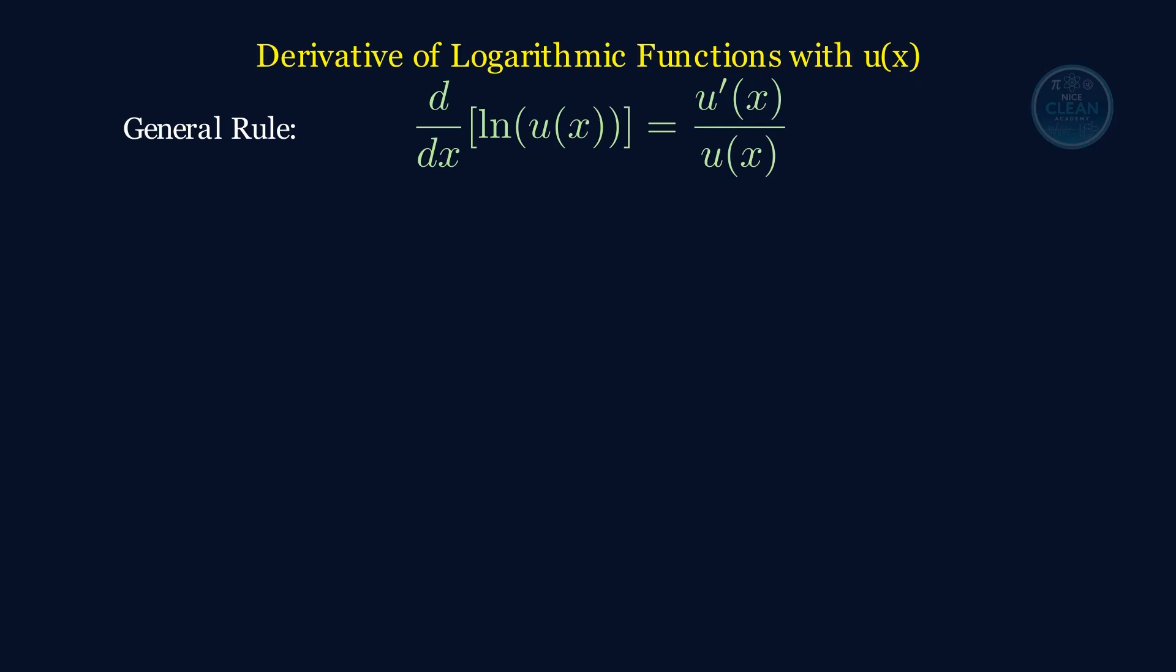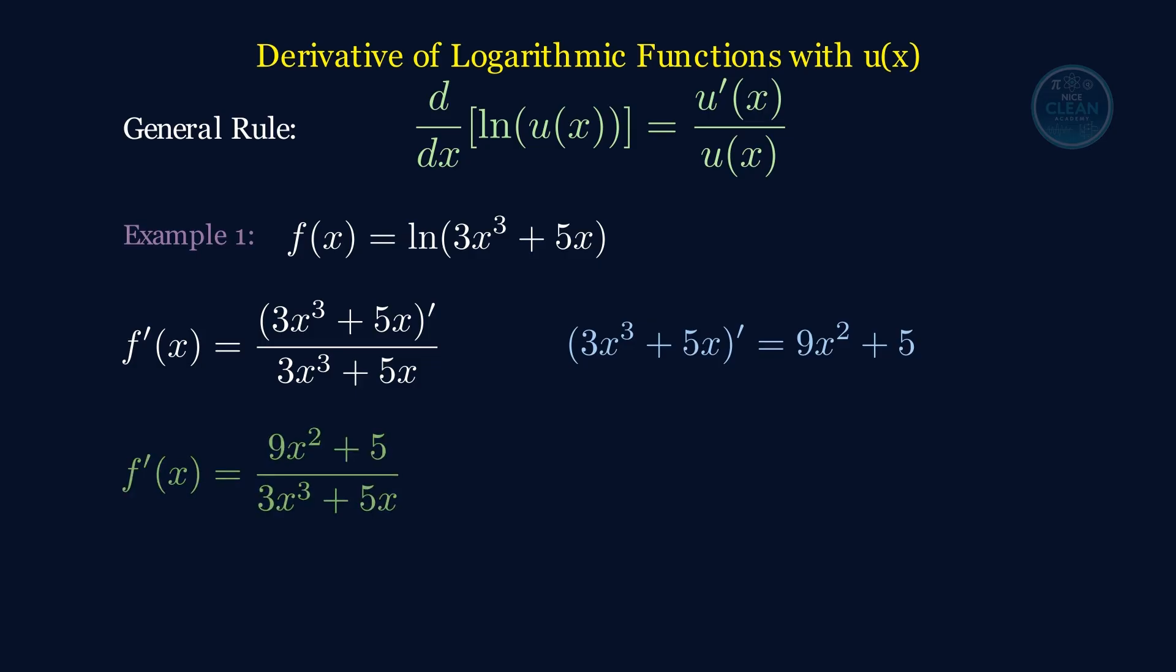Let's try one. The derivative of the natural logarithm of something is the derivative of that something divided by itself. So here, we take the derivative of 3x cubed plus 5x. That's 9x squared plus 5. Then we put it over the original function. So f prime of x equals 9x squared plus 5 over 3x cubed plus 5x.